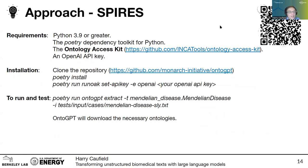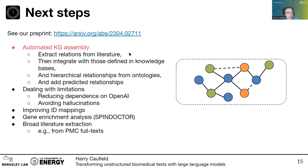If you want to try it yourself — since this is the recorded version, feel free to pause and click the link or scan the QR code — you can try SPIRES through the OntoGPT package. OntoGPT will happily download all the necessary ontologies defined in a given data schema, and you can even create your own data schemas for your own use cases.